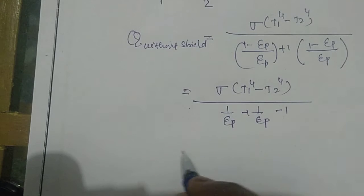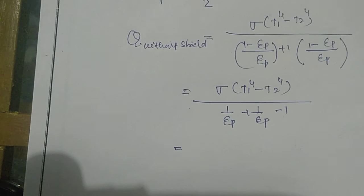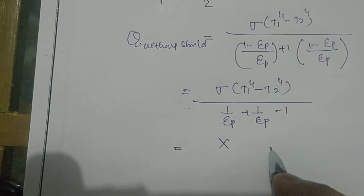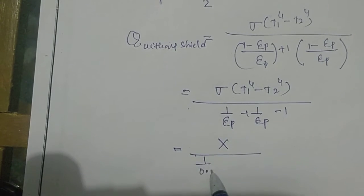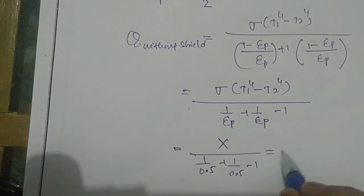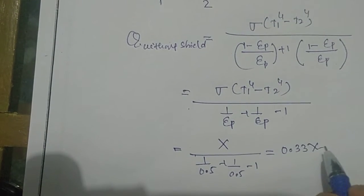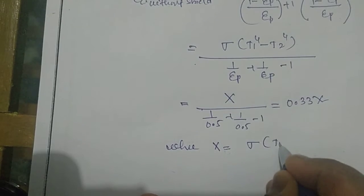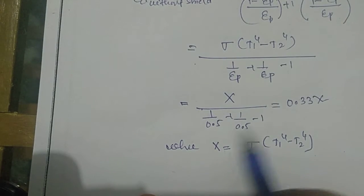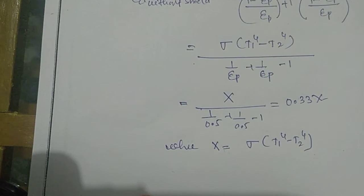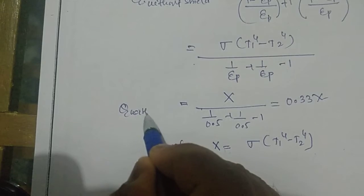Using the general expression, we can write this as x divided by (1/0.5 + 1/0.5 - 1), which gives 0.33x, where x is σ(T1⁴ - T2⁴). We consider x because we don't know the values of T1 and T2, so we keep it as is. This is Q without shields.